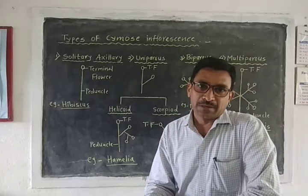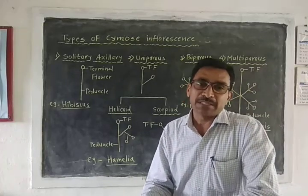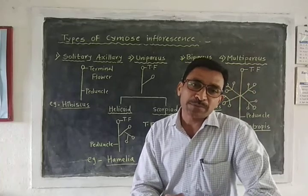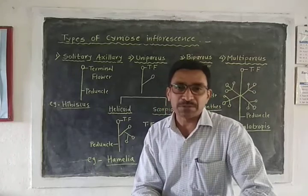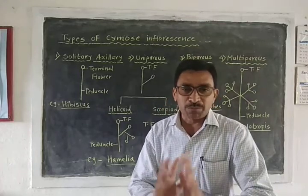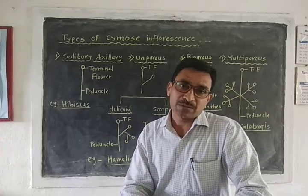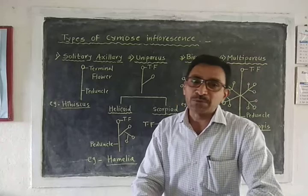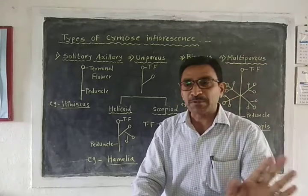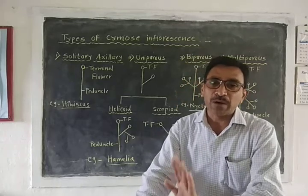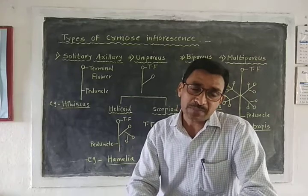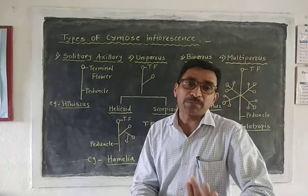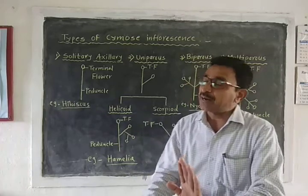Good morning. In the last lecture we studied about the types of racimose inflorescence, and today we are going to study about the types of cymose inflorescence. The mode of arrangement of a group of flowers on the reproductive shoot is called inflorescence. When older flowers are at the apex and younger flowers are at the base, that type of inflorescence is called cymose inflorescence.